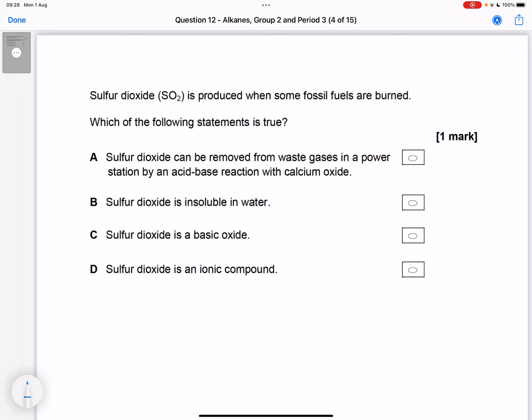Here we have a question about sulfur dioxide. You may have learned about sulfur dioxide in a number of places in the syllabus - maybe in your study of group 2 compounds, you'll see why in a minute, maybe in your study of alkanes as a pollutant, or maybe in your study of periodicity or period 3 as sulfur appears in period 3. Sulfur dioxide is produced when some fossil fuels are burnt. Which of the following statements is true?